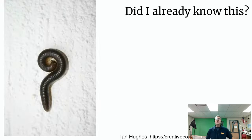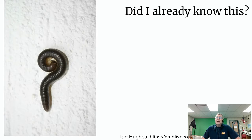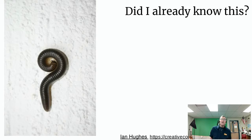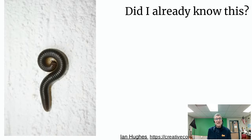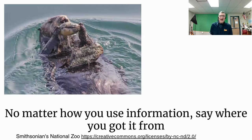The first question you need to ask about whether you need to cite a source of information is: did I already know this? If you did, or if it's considered common knowledge, you don't need to cite that source. But everything else, you do need to cite. So no matter how you use information, you need to say where you got it from.